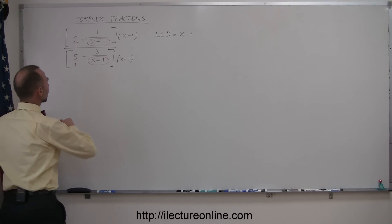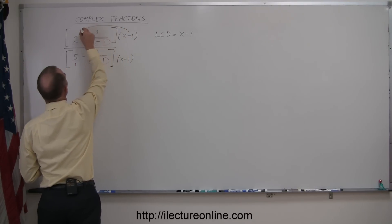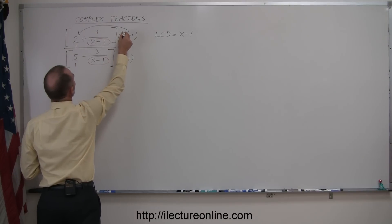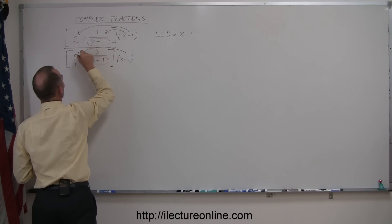Okay, so now we're going to multiply x minus 1 times the number 2 and x minus 1 times this fraction there.